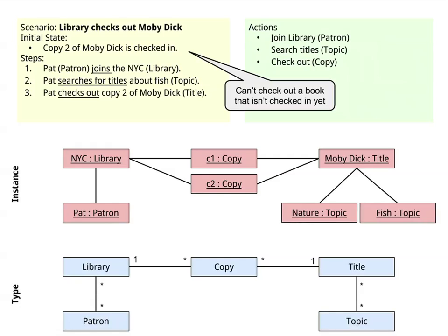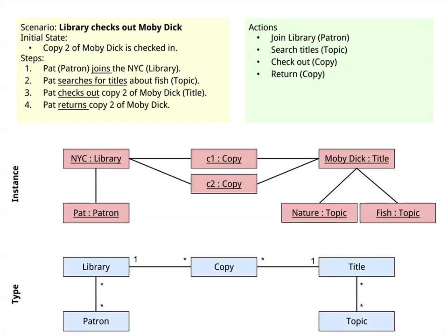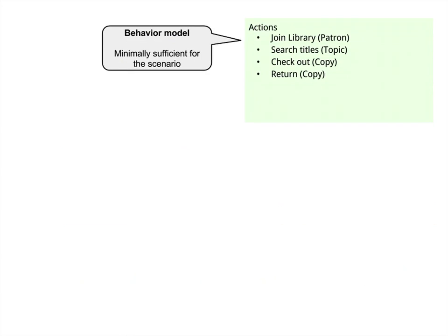What you'll notice here is that there's really a state that comes before the scenario even starts, which is what was true before Pat joined the library. In this case, it was that copy two was already checked in to the library. So the final step in the scenario is that Pat returns copy two of Moby Dick, and this is what our full model looks like. We've got four actions, a snapshot of a point in time with Pat as a patron in the library, copies and Moby Dick, and a generalization of that. I'm using this to keep everything clear in my head and understand how this domain works that I've just learned about.